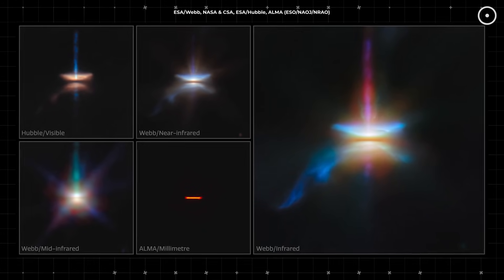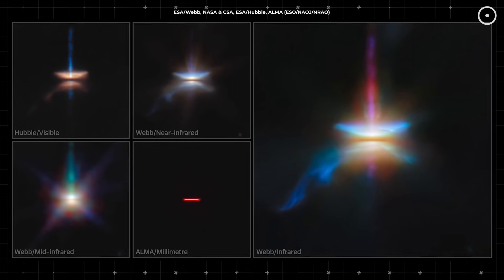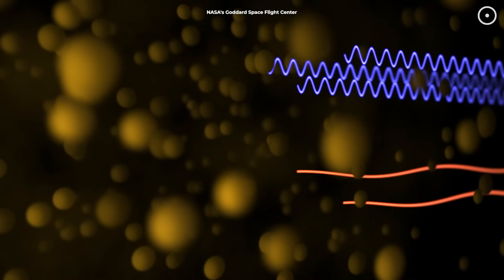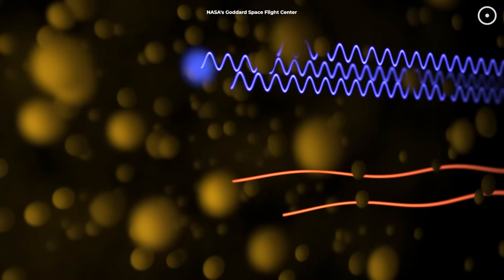And this matters because different types of light tell us different parts of the story. The infrared light that Webb sees can pierce through the dust clouds that normally block our view. And what we're seeing there is absolutely mind-blowing.